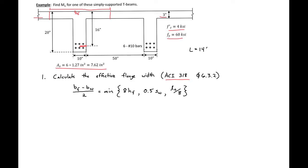So then we can plug in our values and we'll have our three expressions or three values here. Eight times the height of our flange three inches is 24 inches. 0.5 times the spacing from web to web, so that spacing is 50 inches, will be equal to 25 inches. And then we have our span length 14 feet times 12 inches over 8 and this is going to be equal to 21 inches. So the minimum of these three values is 21 inches.